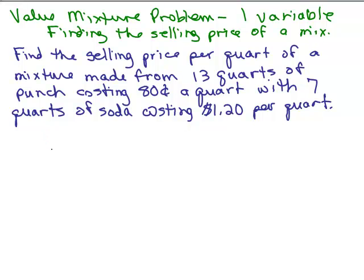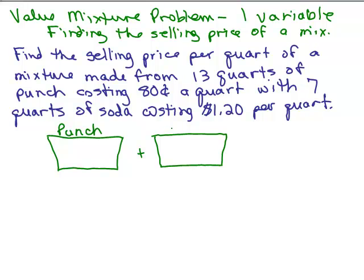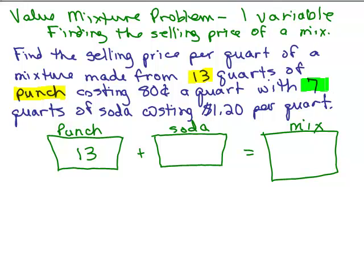So I'm mixing punch with soda. Let's draw a little picture of that. Let's say that's our vat of punch and we're going to pour that into a mixture that also has some soda. So we have a mix over here. Now what do we know? Do we know how much punch we're going to be using? Well, it says right here that we've got 13 quarts of punch. So that's given. So we could fill that in. And what about the soda? Well, we've got 7 quarts of soda. So we could also fill that in right here.